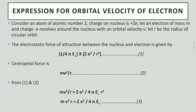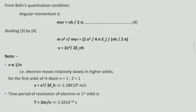The centripetal force is given by mv²/r. On equating these two expressions we have: mv²/r = Ze² / (4πε₀r²). On cancellation of r and interchanging the terms, mv²r = Ze² / (4πε₀). From Bohr's quantization condition, the orbital angular momentum is given by mvr = nh / (2π).